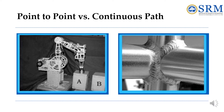The second picture shows an example of continuous path motion. This is used when there is a need to follow a complex path through 3D space, possibly at high speeds. Examples include spray painting, welding, and polishing. These points are generally taught by manual lead-through with high-speed automatic sampling.